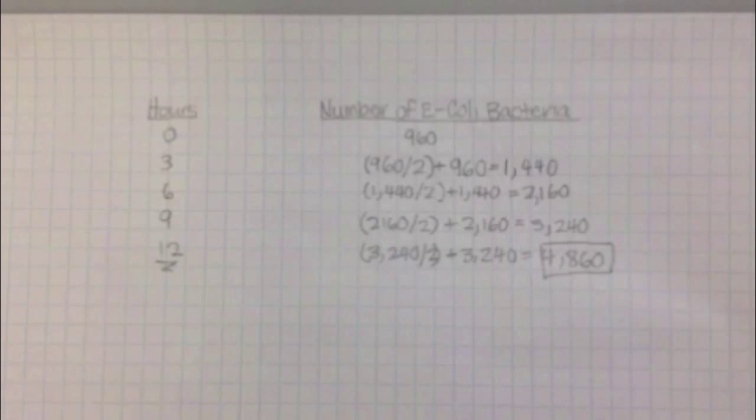After 12 hours, we divide 3240 by 2, which is 1620. Then we add 1620 to 3240. The result is 4860. Our goal was to find out how long it would take for 960 bacteria to increase into 4860 bacteria.